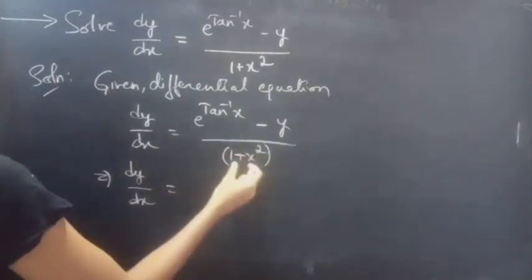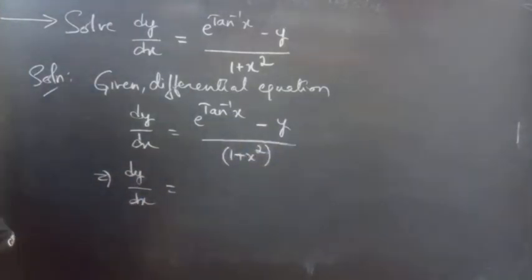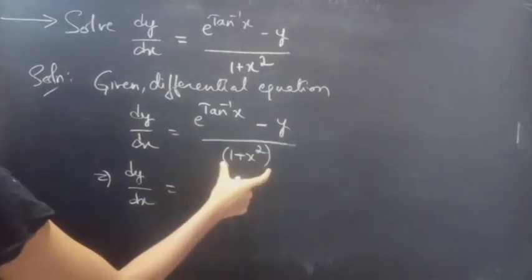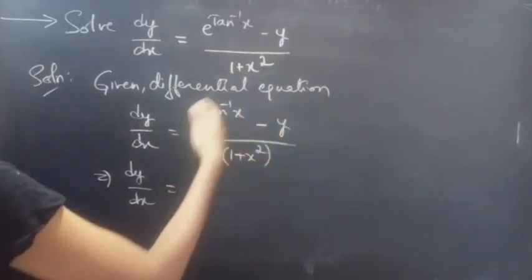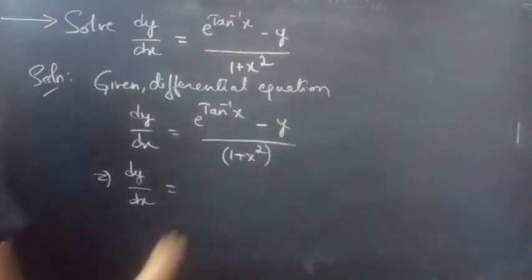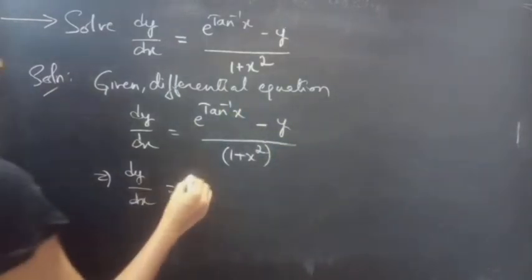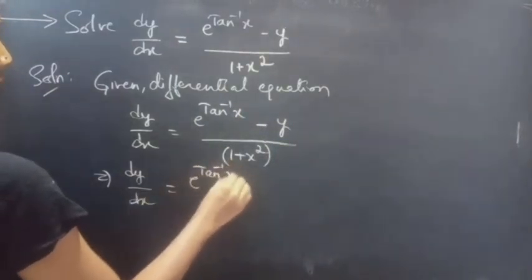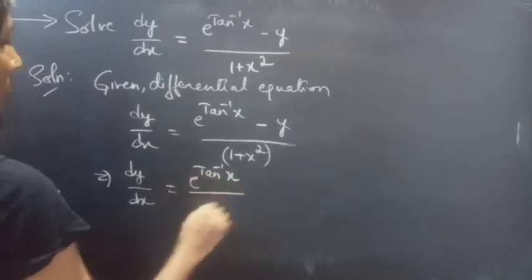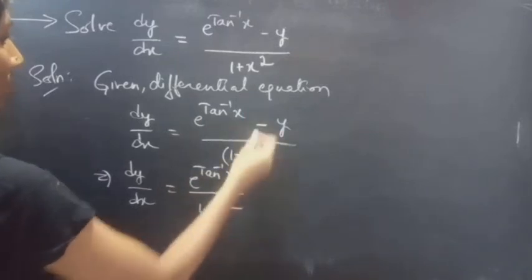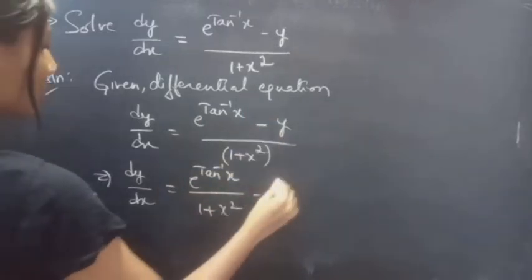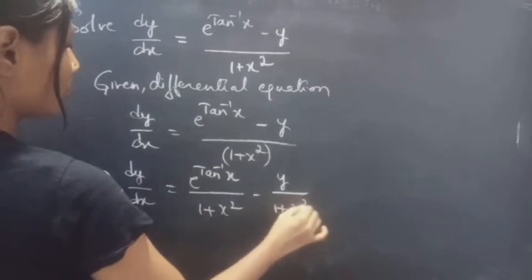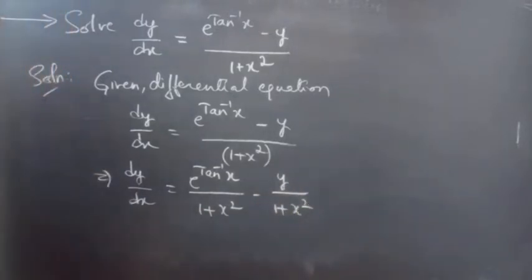Consider 1 plus x squared as one term. In the numerator you are having two terms and in the denominator you are having one term. So, we can split the RHS into two terms: e^(tan⁻¹x) divided by (1 plus x squared), minus y divided by (1 plus x squared).